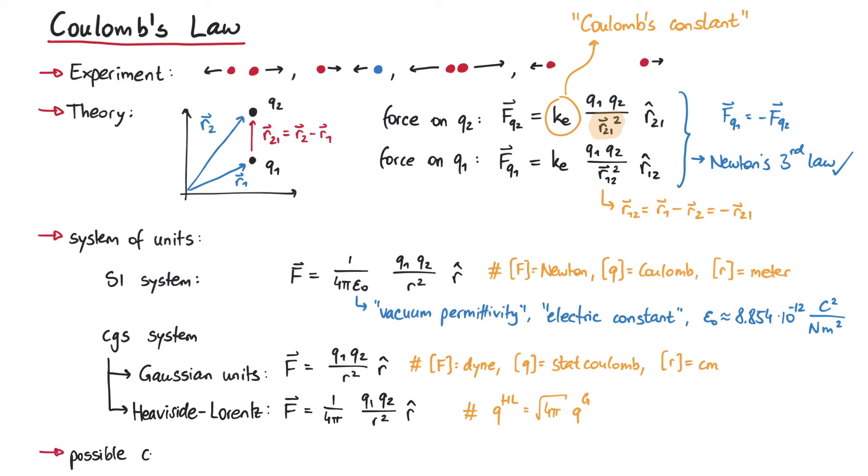As a final remark, Coulomb's law is sometimes written using an r to the third power in the denominator. Don't let this confuse you, because next to it we have a full vector instead of a unit vector. But that's pretty much it for this video. So, thanks for watching.